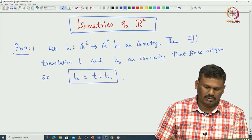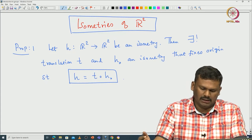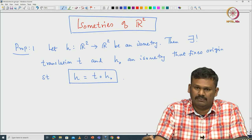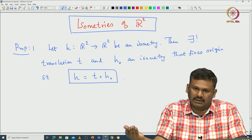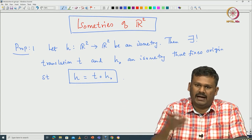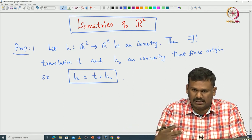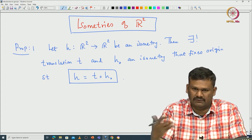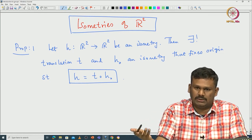H₀ fixes the origin such that H can be written as T∘H₀. This is clear geometrically: you look at where the origin is mapped under H, call that point T, then translate that point back to the origin. Once you compose with that translation — or the inverse of the translation — it will map the origin to the origin.